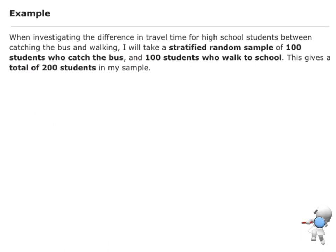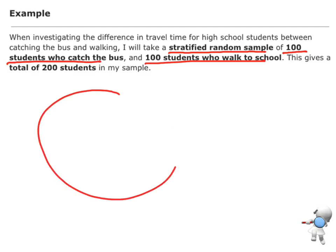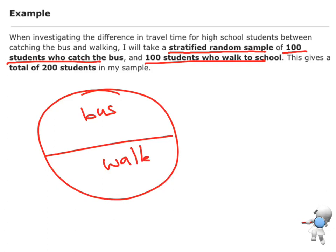Here's another example. If I'm looking at the difference in travel time, I would take a stratified random sample with two sample sizes — 100 students who catch the bus and 100 students who walk. I would take all of my high school students, separate them into those who catch the bus and those who walk, and take a sample size of 100 from each group. That would be my description.